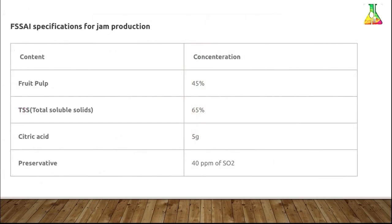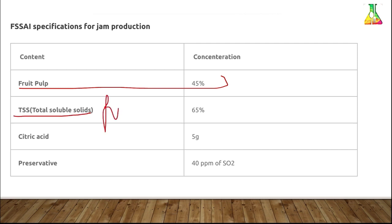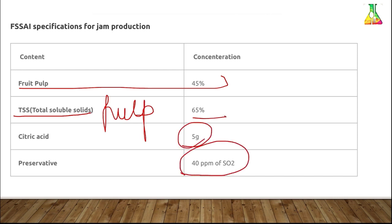Here are the FSSAI specifications for jam production: fruit pulp concentration should be 45 percent; total soluble solids concentration should be 65 percent; citric acid should be 5 percent; and preservatives should be 40 parts per million.